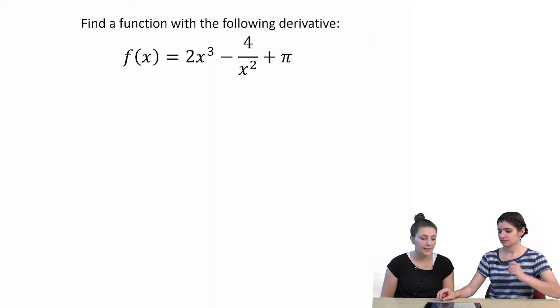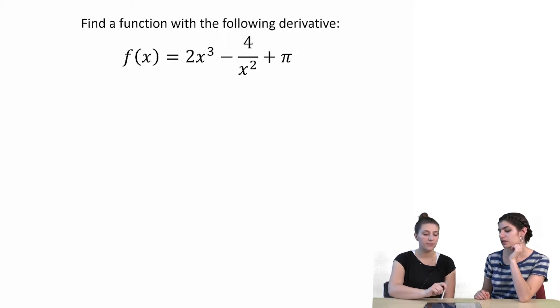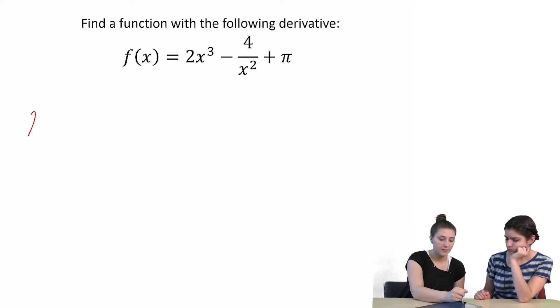Maybe if we like added one to the coefficient and the exponent. I mean, I don't know if that will work, but we can try it. So we started with 2x to the third, so maybe if we like add one to each and we get 3x to the fourth.